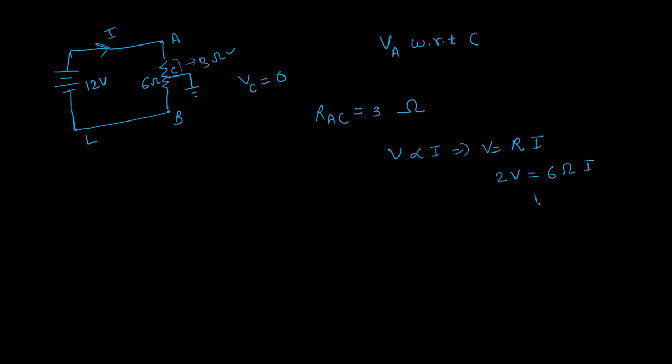I is equal to 12 by 6, which is equal to 2. That means the current is 2 amp. Where is the voltage drop? A and C. Because the voltage is at A with respect to C.